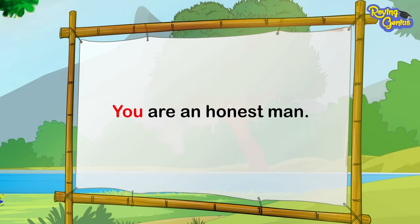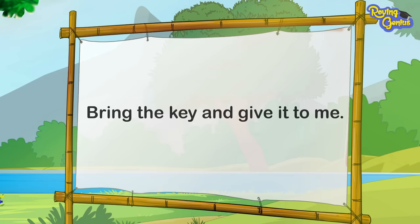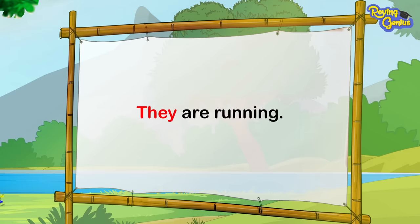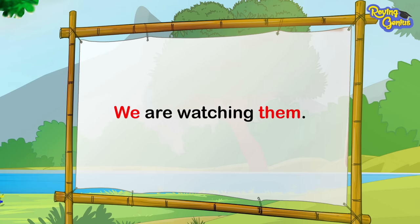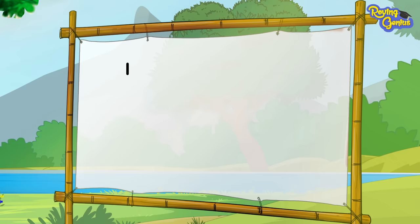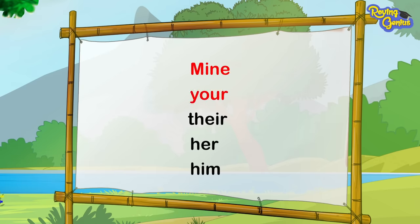You are an honest man. Emily is a girl — here, she is beautiful. Bring the key and give it to me. They are running. He bought a bicycle. It is blue. We are watching them. Here, I, you, he, she, it, they, we, me, them are all pronouns. Some other pronouns are mine, your, their, her, him, etc.